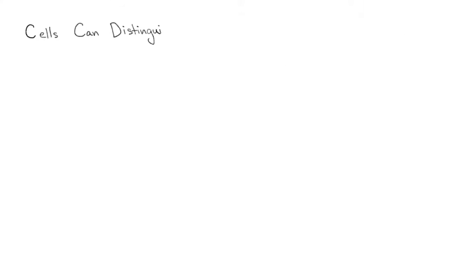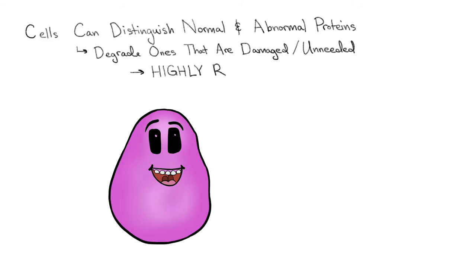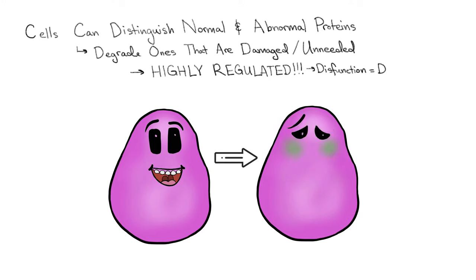Cells can distinguish normal and abnormal proteins, and degrade ones that are damaged or unneeded. This ability is highly regulated, as dysfunction can cause disease.